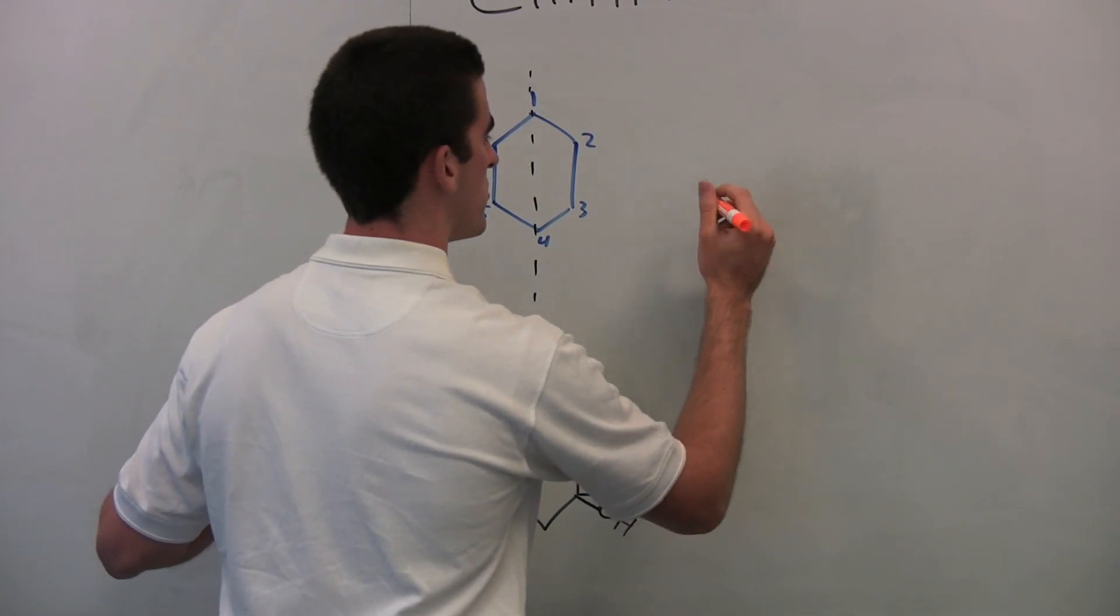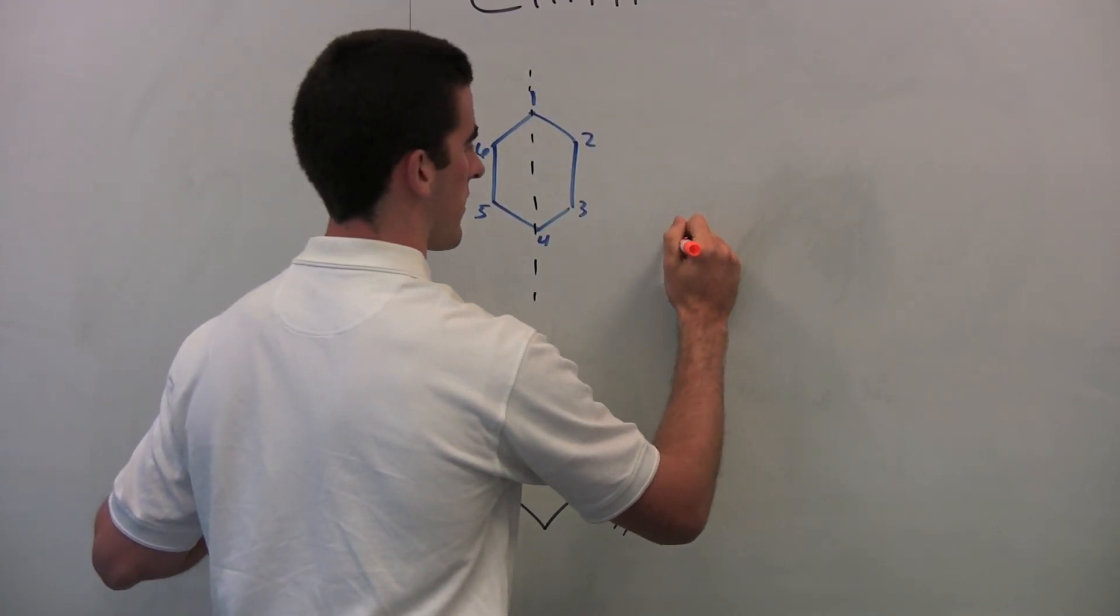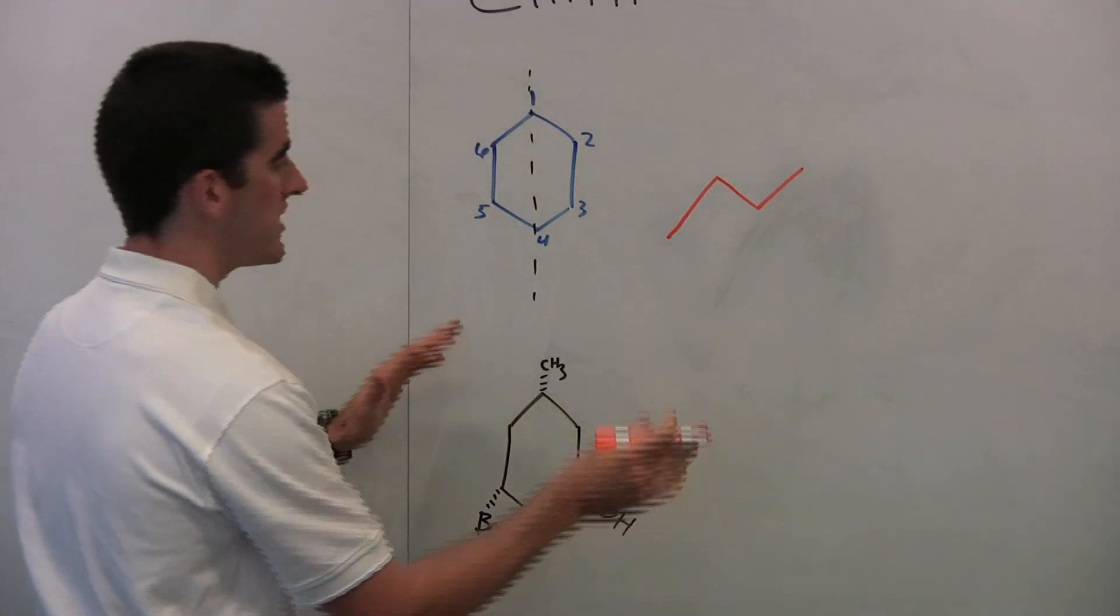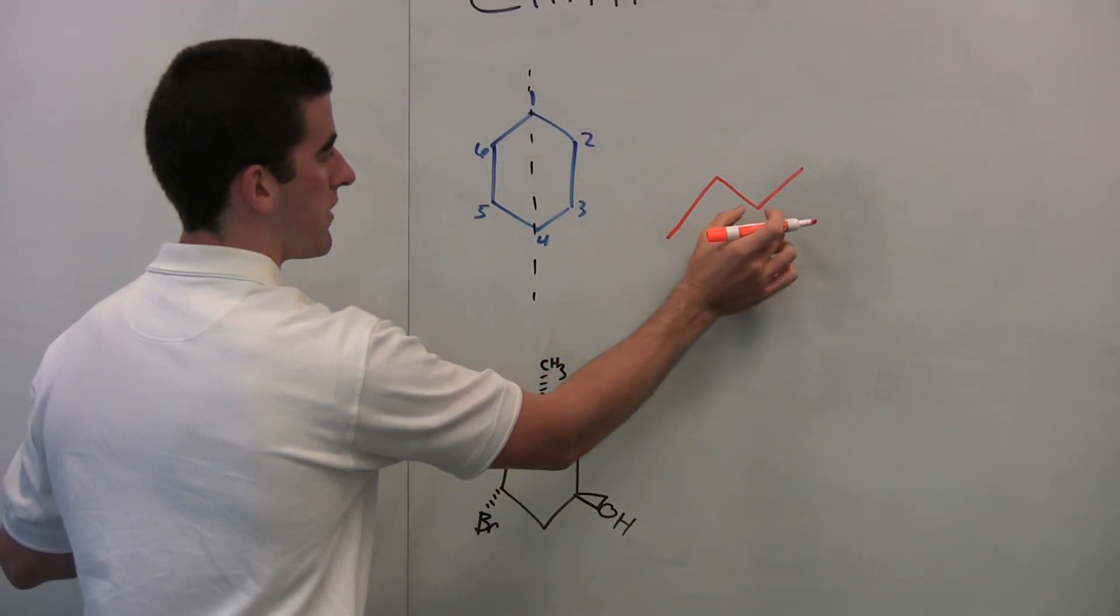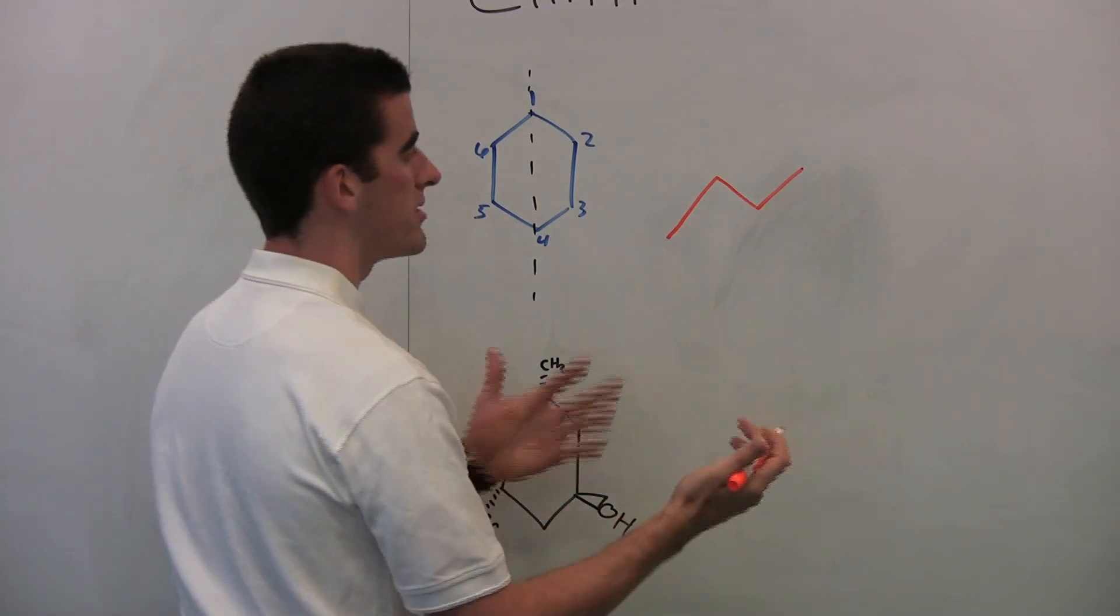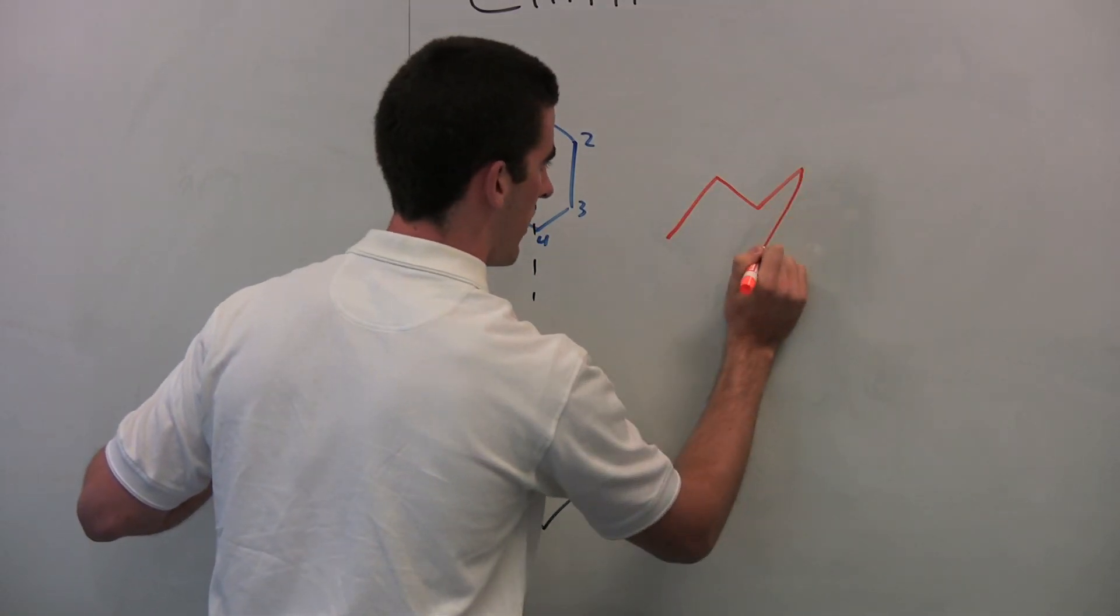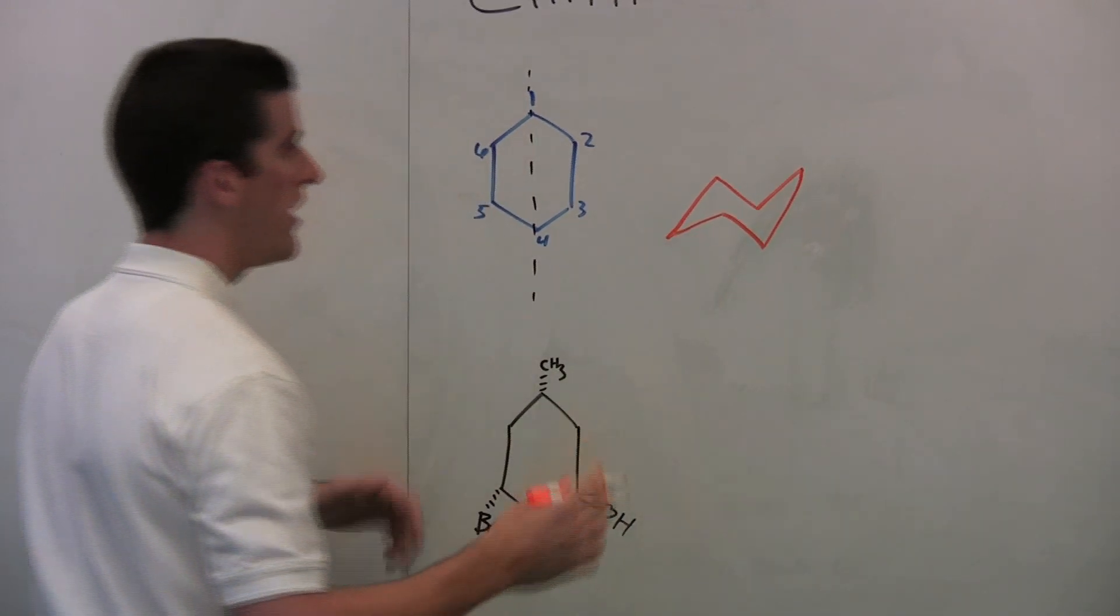So what you first do is you draw out the actual back part here. And that's just doing it like this. You start to do mountain, valley, and then end with a mountain there. It's easier if you start lower than the middle of that valley here. And then what you do is just do the reverse. So we did mountain, valley, and mountain. We're going to go back and do valley, mountain, valley. And that's our chair.